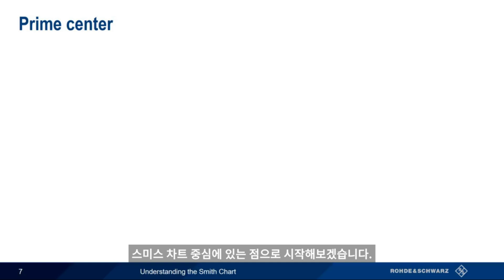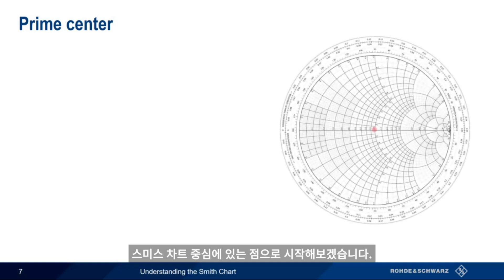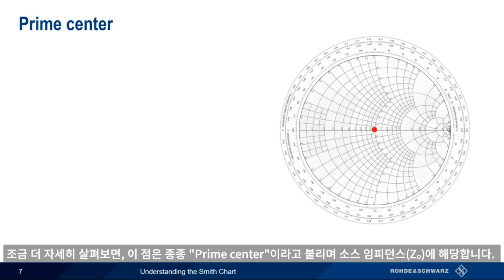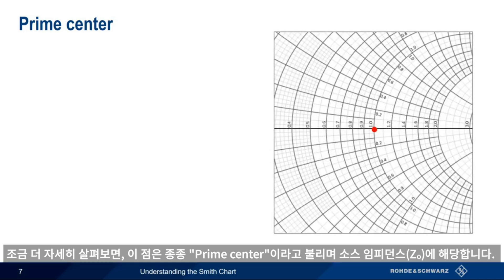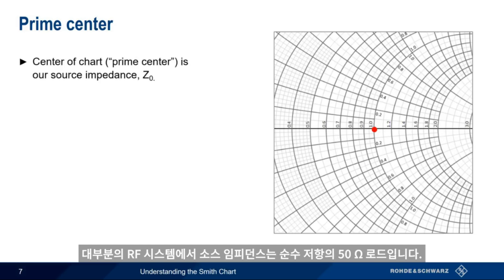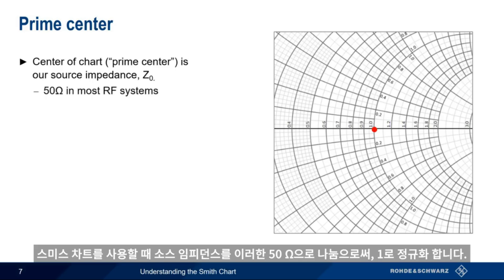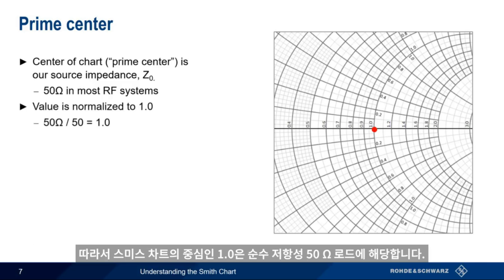We'll start our tour of the Smith Chart by looking at the point directly in the middle of the chart. This point is often called the prime center and corresponds to our source impedance, Z sub 0. In most RF systems, our source impedance is a purely resistive 50-ohm load. When using the Smith Chart, we normalize the source impedance to 1, in this case by dividing by 50, so the center of our Smith Chart, 1.0, corresponds to our purely resistive 50-ohm load.